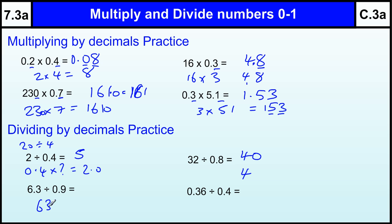63 divided by 9 is 7, and 7 times 0.9 is in fact 6.3, so that's just a straightforward one.